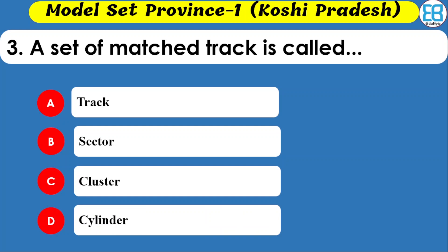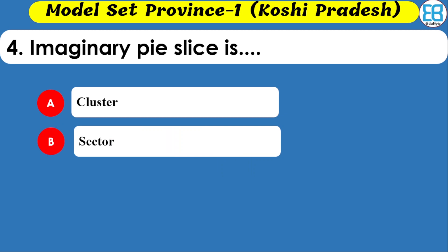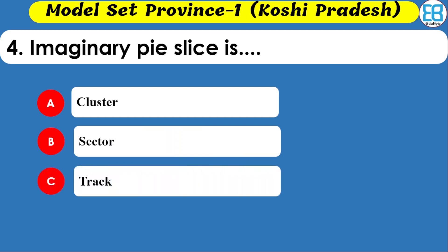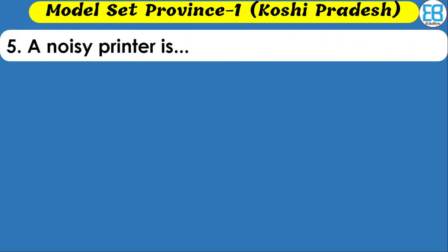An imaginary pie slice is called a sector. Options given are cluster, sector, track, and none of the above. The correct option is sector — an imaginary pie slice is called a sector.